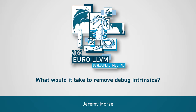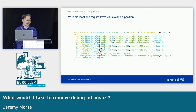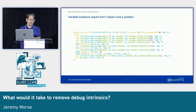This is a talk about removing debug intrinsics from LLVM. What are debug intrinsics? In this slide I've got some debug value intrinsics, and the important thing about them is they have a position in the program, they connect to a value in the program, and they've got even more metadata. We're going to ignore almost everything about them in this talk today except for the fact that they have a position and they are an intrinsic in the function.